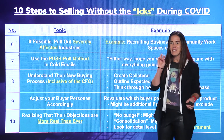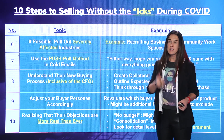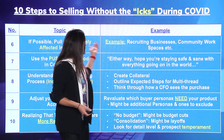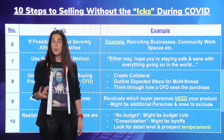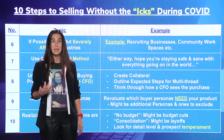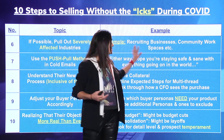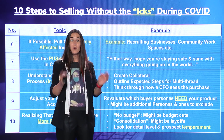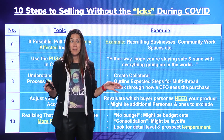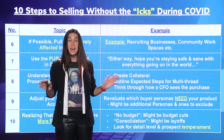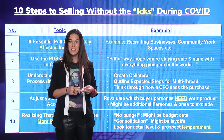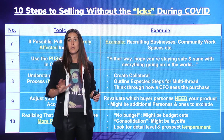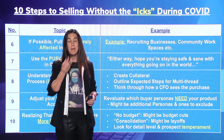Number six: if possible, I would pull out severely affected industries. There are a number of severely affected industries — recruiting businesses, community workspaces, commercial real estate. If you are selling into some of these businesses, I understand that in some cases you may not have a choice — I never give a specific diagnosis to someone I don't know. But if you can afford the luxury of not selling into WeWork right now, for instance, I would pull them out of your book of business.